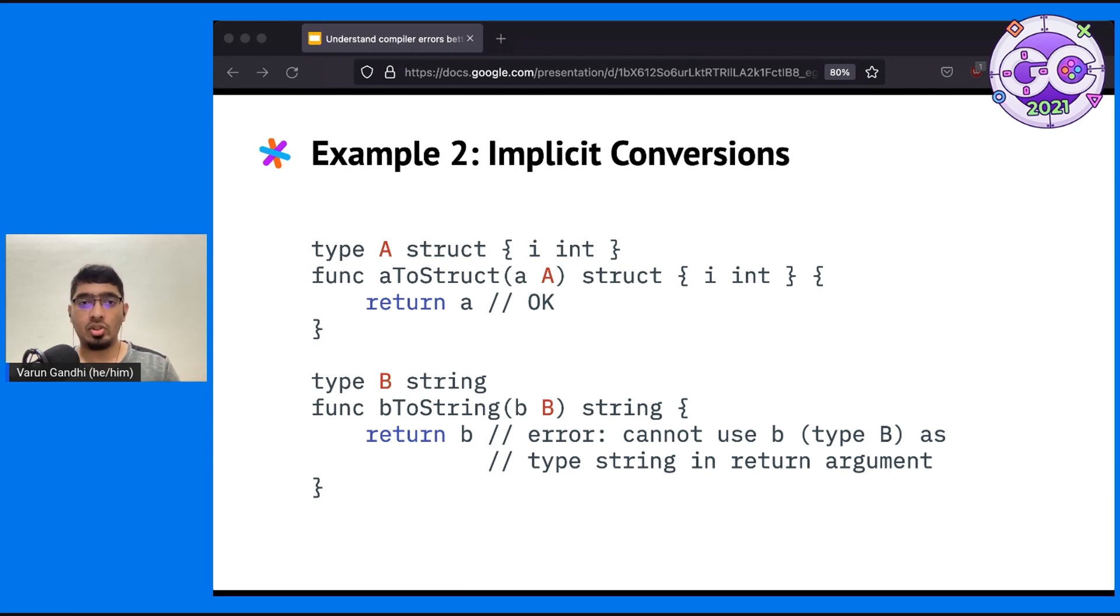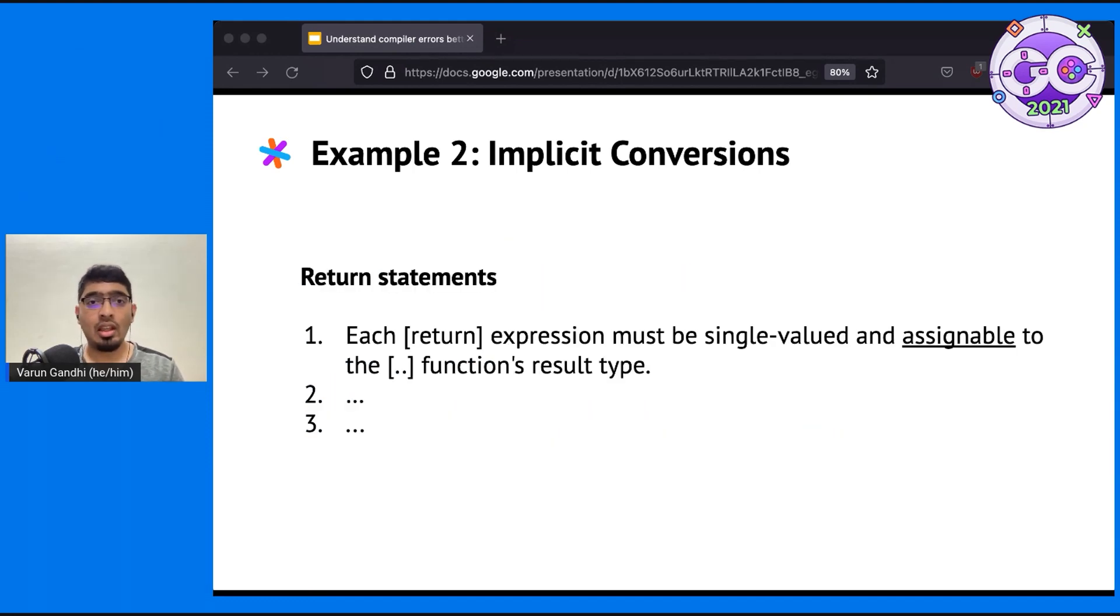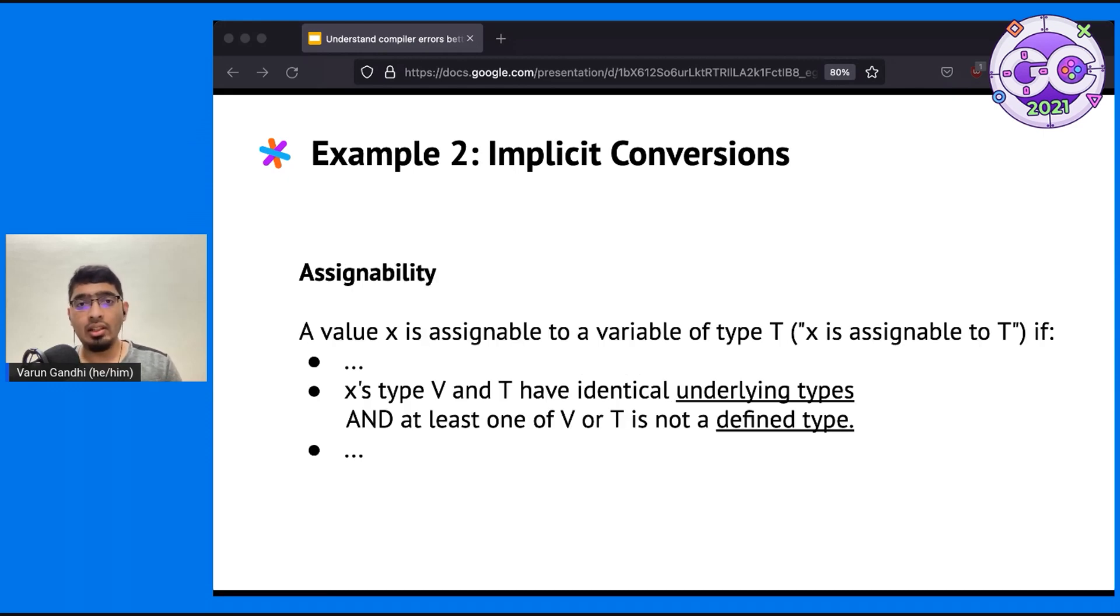Turns out the first function works and the second function doesn't. The compiler tells us that you can't use B as type string. But it's not clear why the example with A works, but the example with B doesn't. They seem pretty similar, right? Again, let's look at the spec to see if it can help us better understand what's going on here. In this case, since the error is in type checking a return statement, let's look at that section. According to the section on return statements, the condition that applies here is that the return value must be assignable to the function's result type. Assignable here is a key term that is defined in the spec. Let's look at its definition. There are many different cases for when some variable is assignable to a type T, but the case that is relevant here is the one that talks about identical underlying types. Here, underlying type and defined types are also terms which are defined in the spec. I'm not going to show you their definitions because there's only so much space on the slide, but I will explain them in context as we go along.